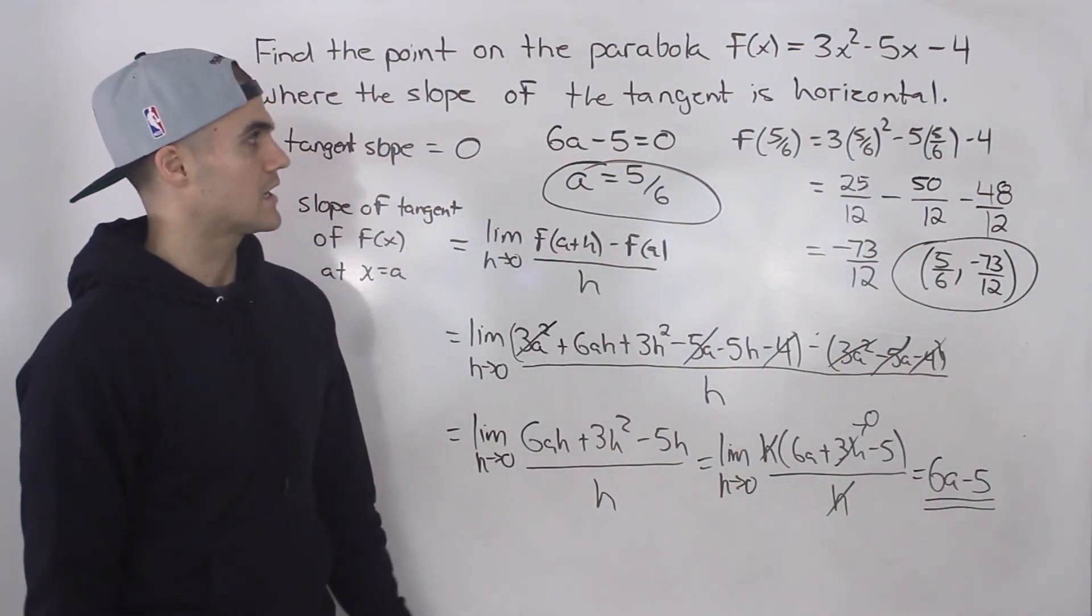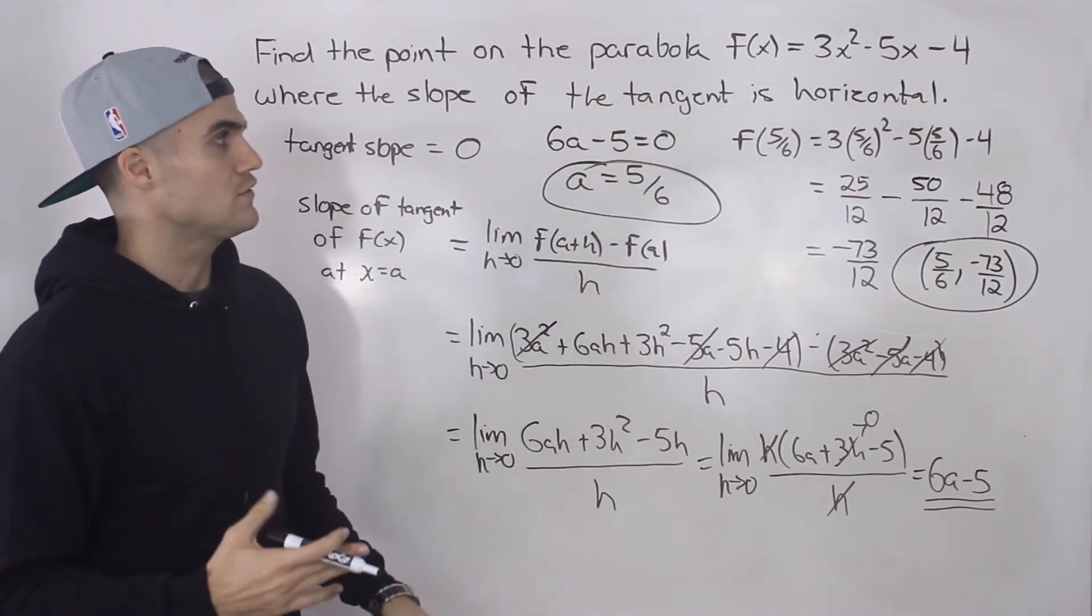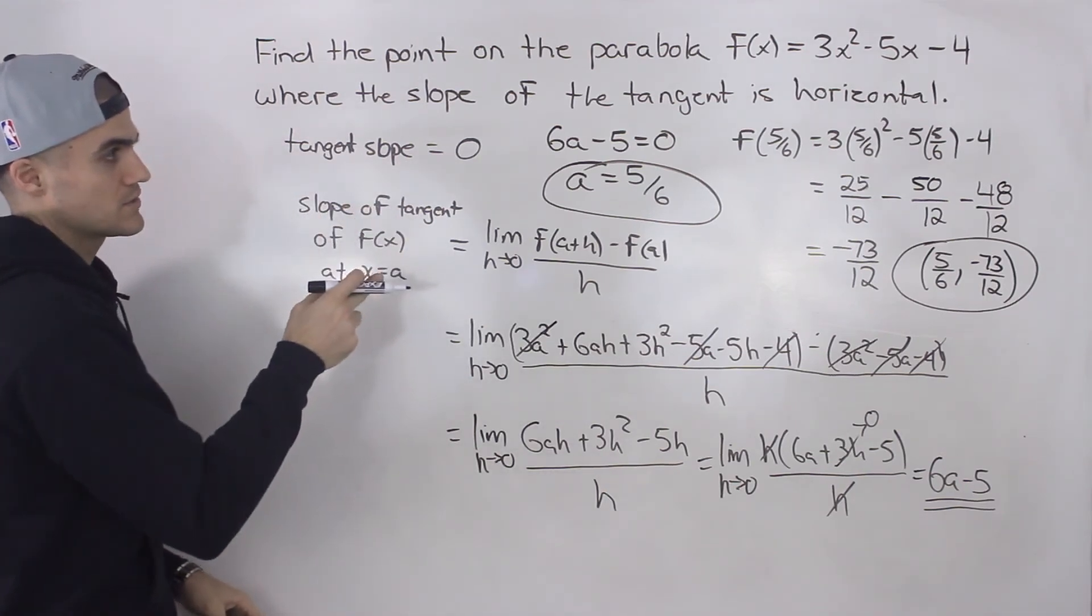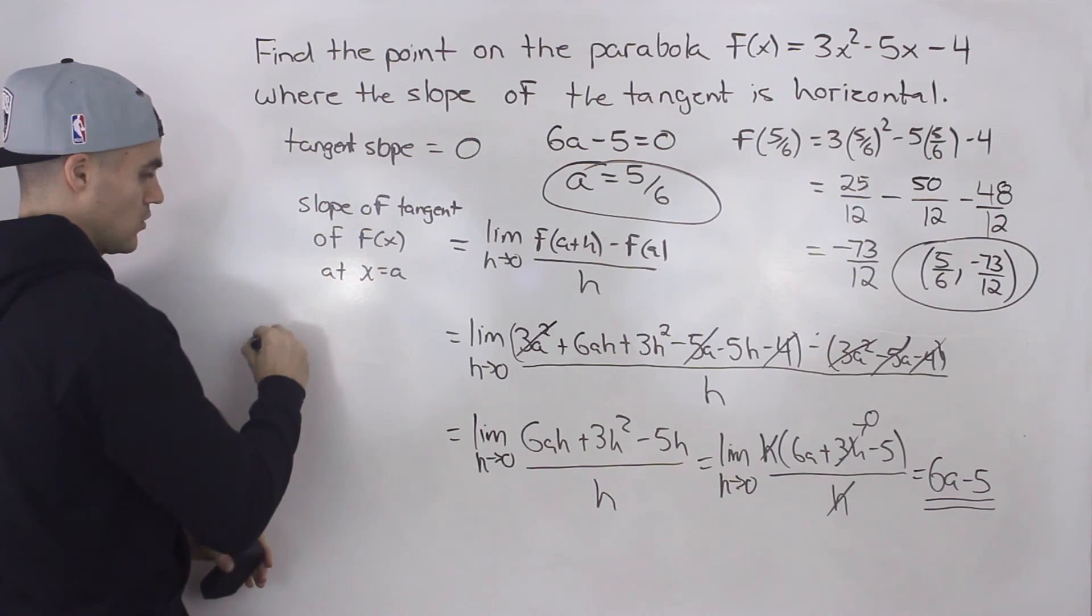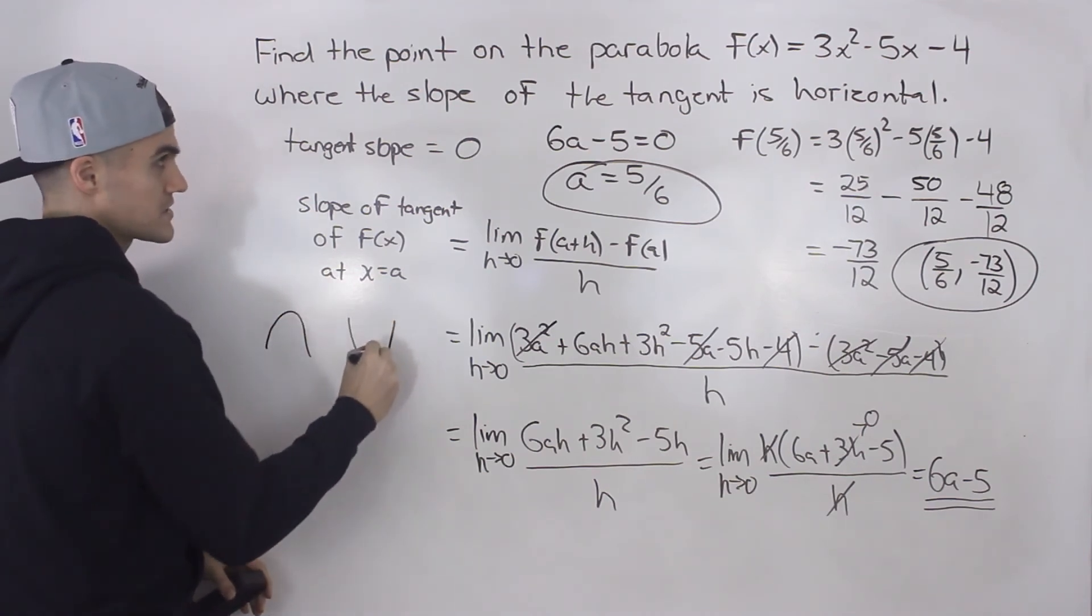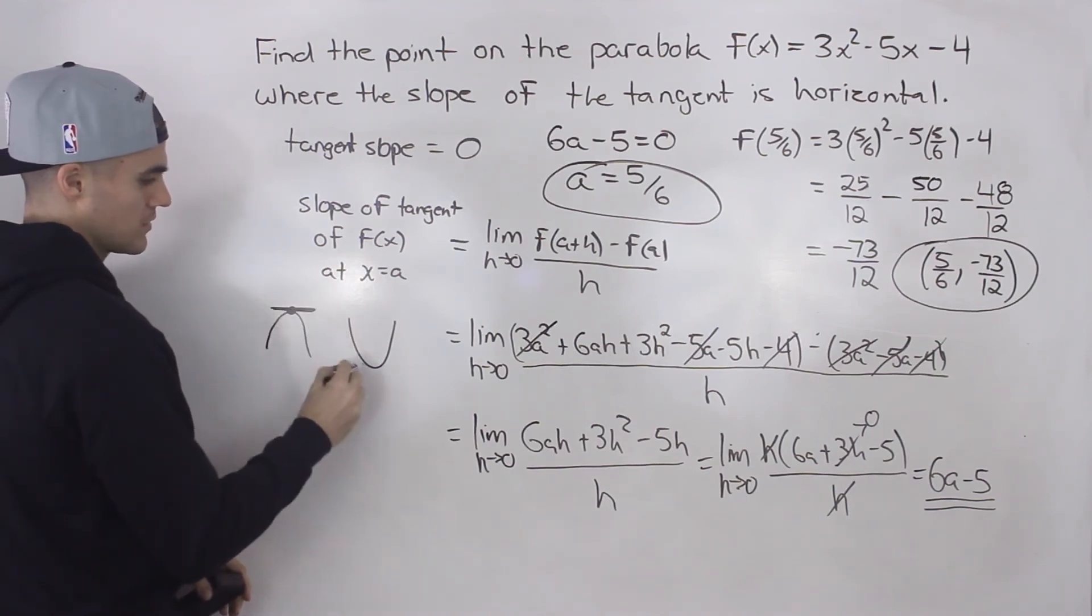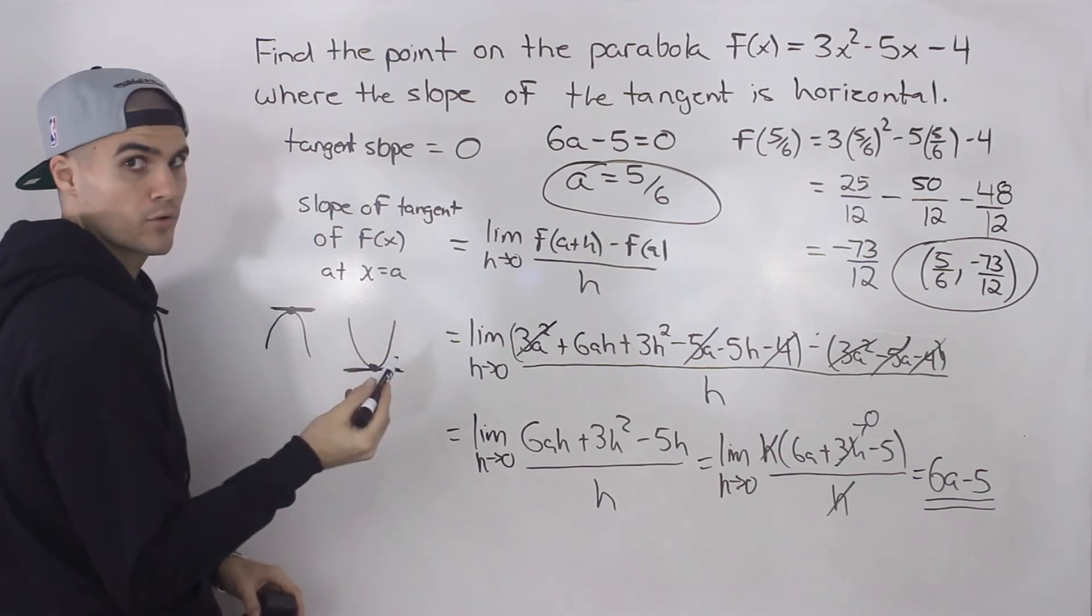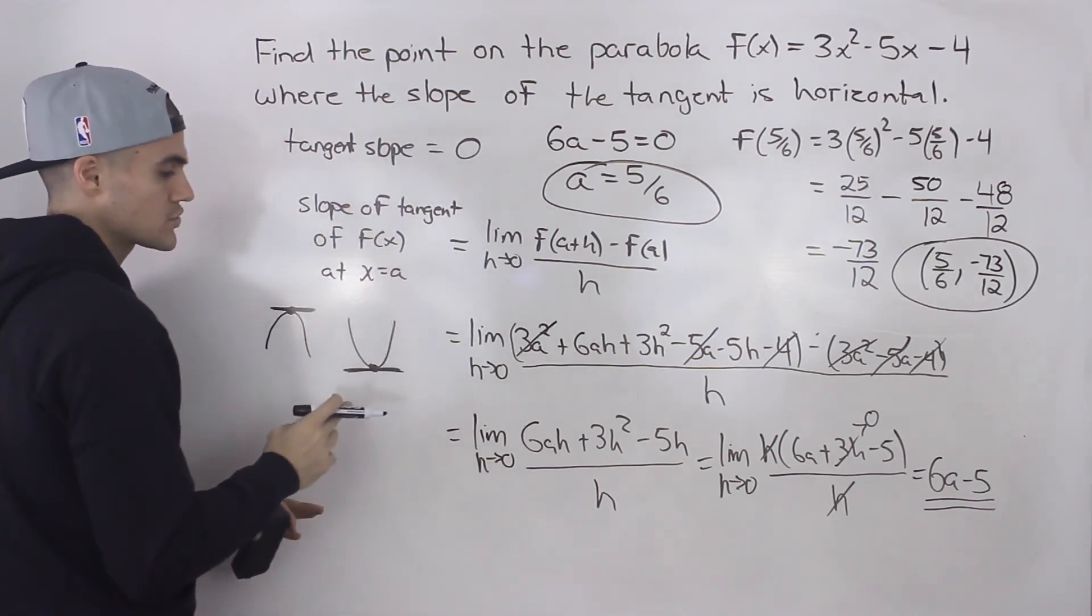Now another point I want to make about this specific question: because we're dealing with a parabola, if you think about it, for any parabola, the tangent is always going to be horizontal on the vertex. So whether a parabola opens down or whether it opens up, like in this case, the only time that the tangent is going to be horizontal is at the vertex of a parabola. Remember, that's only for a parabola and not any other function.